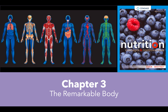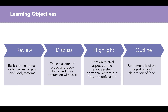Welcome to the first video for Chapter 3, The Remarkable Body, where we're going to step away from food for the most part and focus on some pertinent anatomy and physiology for this course. The learning objectives are to review basics of human cells, tissues, organs, and body systems; discuss the circulation of blood and body fluids and their interaction with cells; highlight nutrition-related aspects of the nervous system, hormonal system, gut flora, and defecation; and outline fundamentals of digestion and absorption of food.